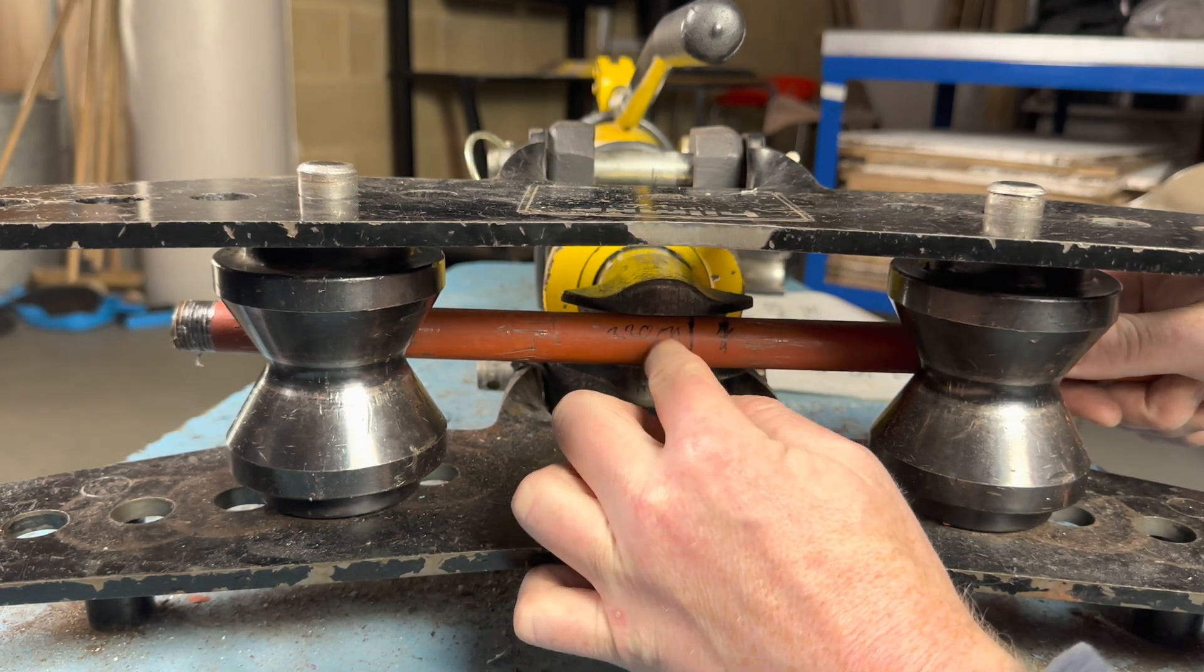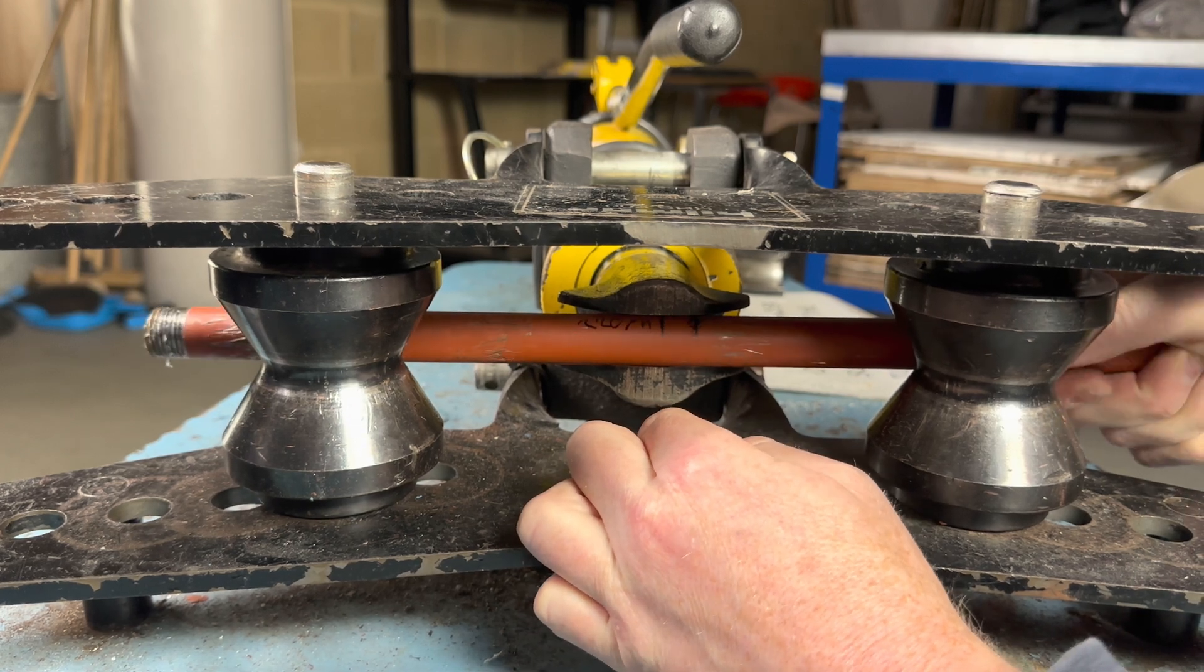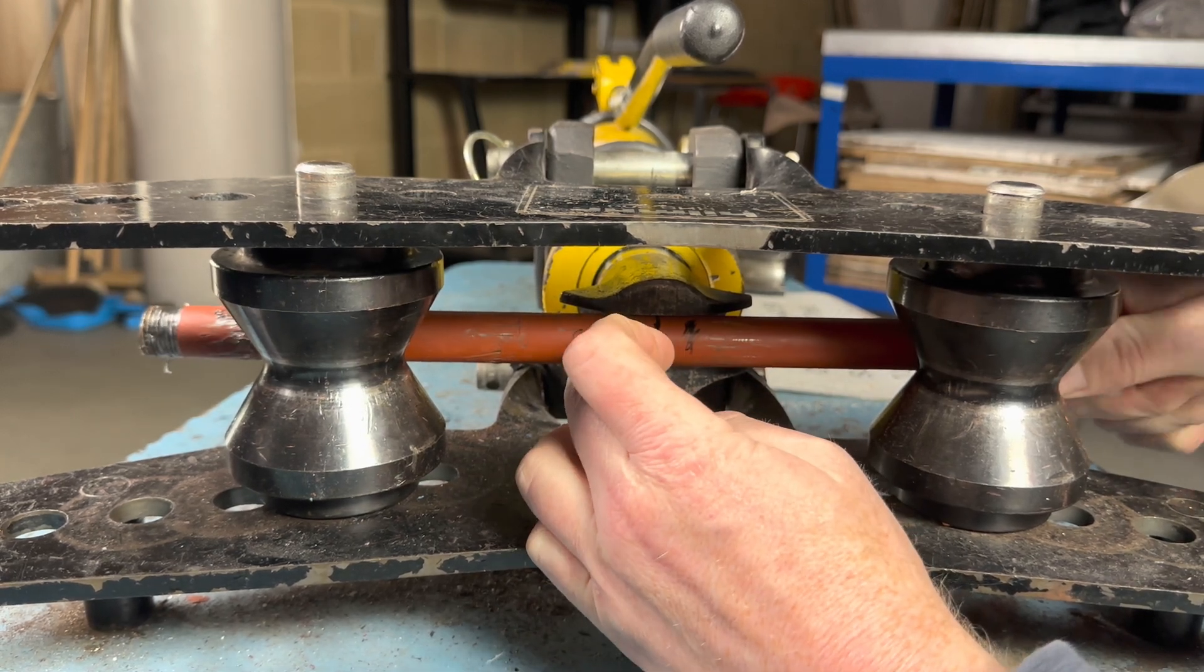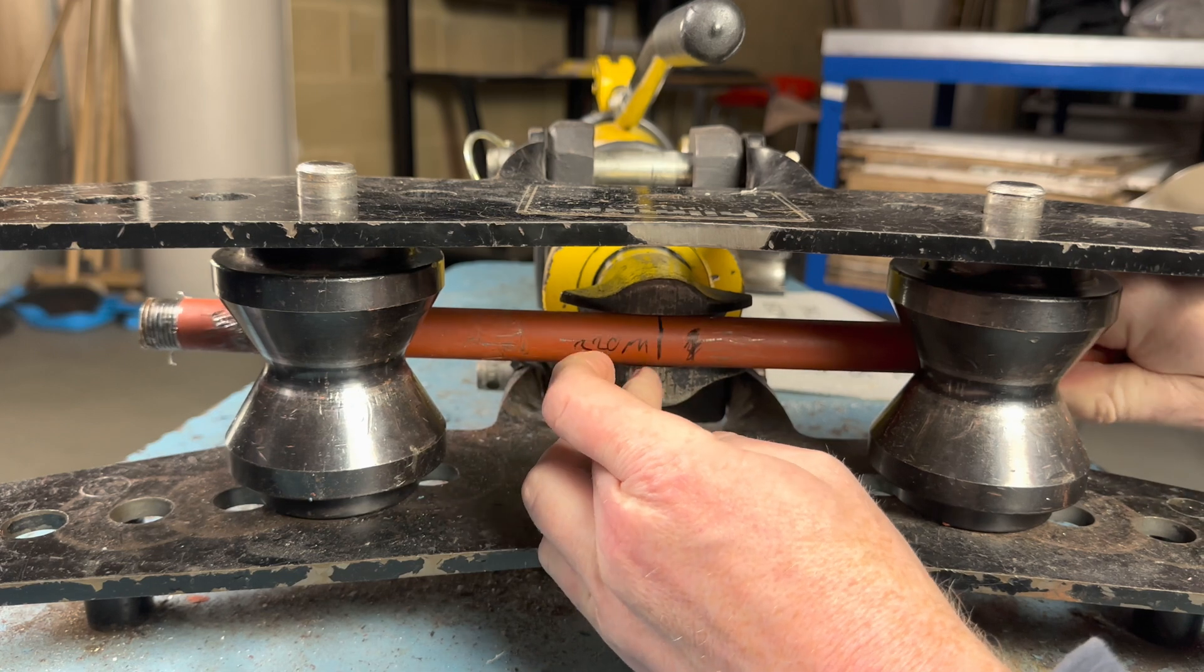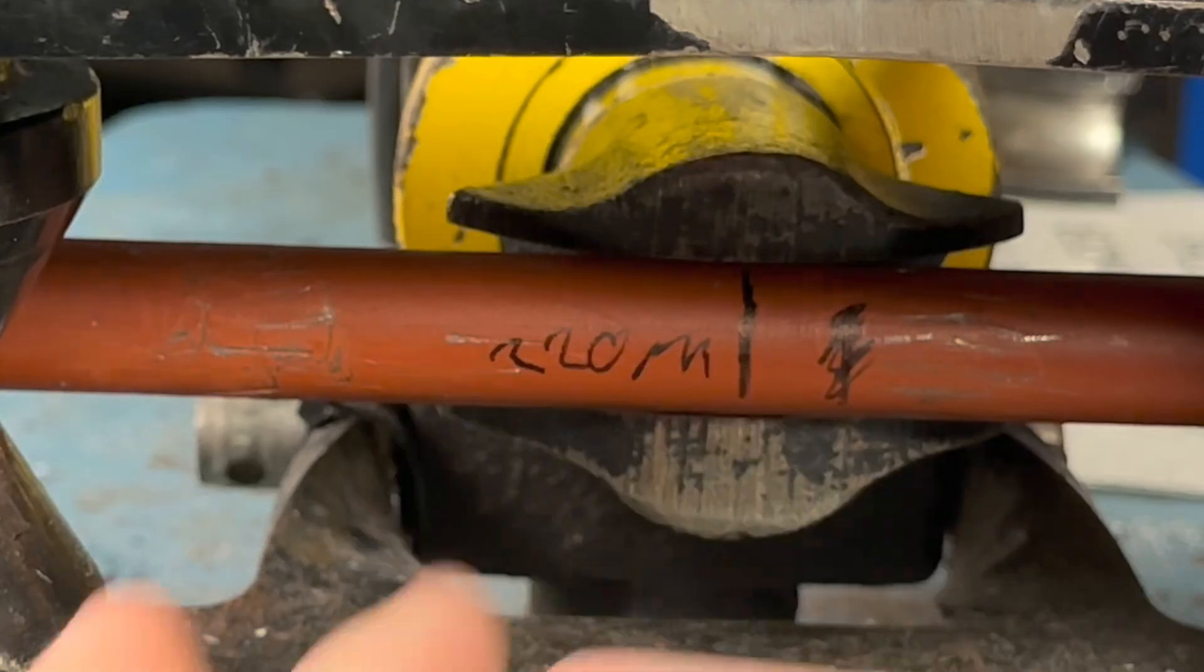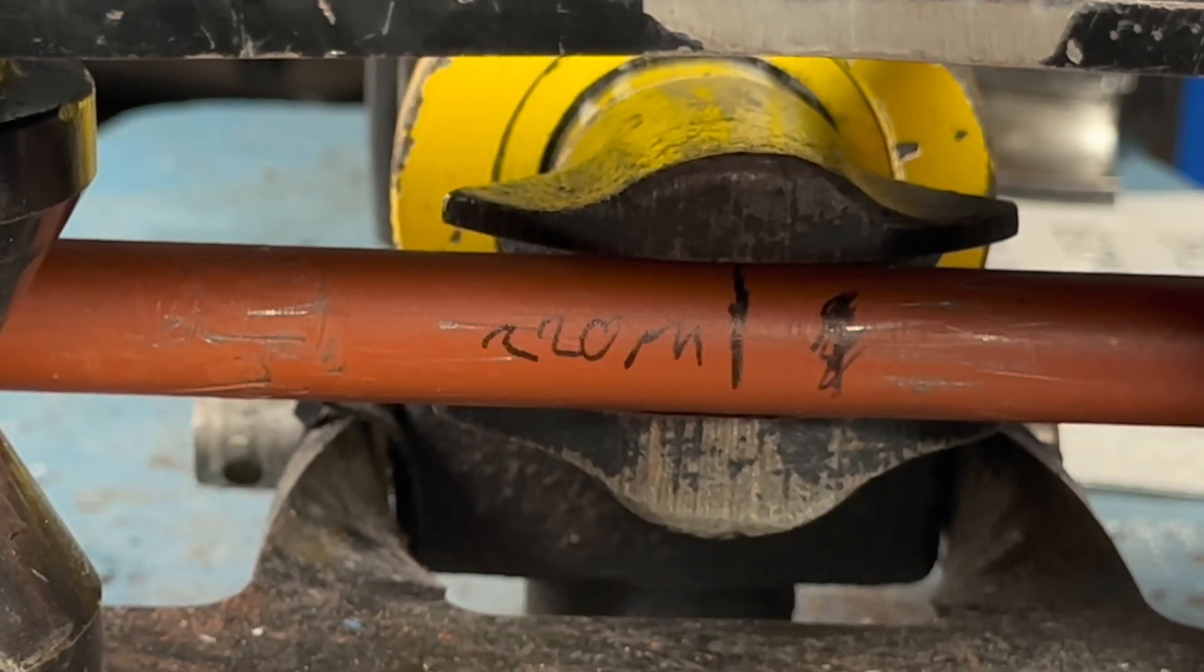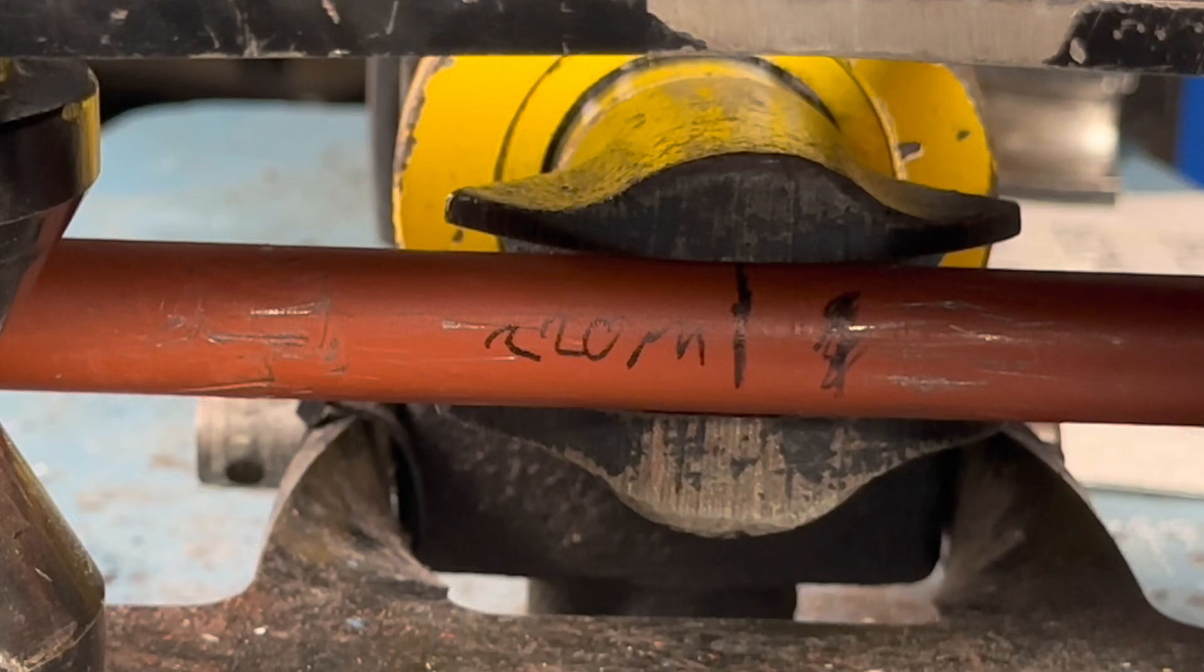We just need to wiggle it along a bit so that line is in the center of the former, which is there. We are now ready to bend the pipe.